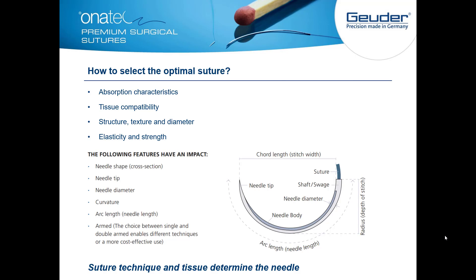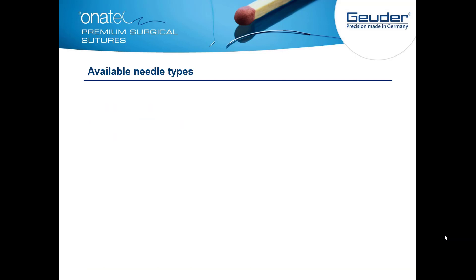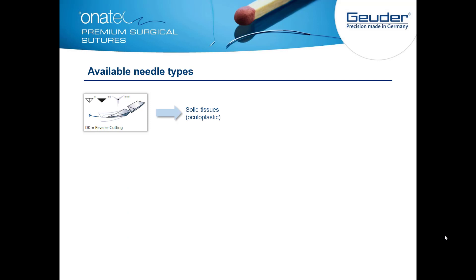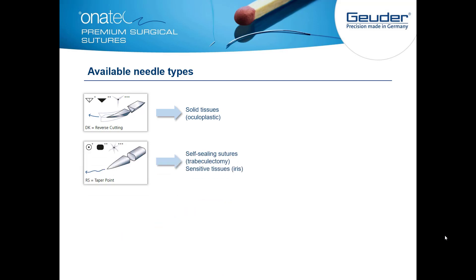For the needle characteristics, you take into account the needle shape, the needle tip, the needle diameter, curvature, arc length, and whether it is single or double armed. When you choose the needle, you also have to consider the shape of the tip. Available needle types include reverse cutting for solid tissues and oculoplastics, and taper point for self-sealing sutures.